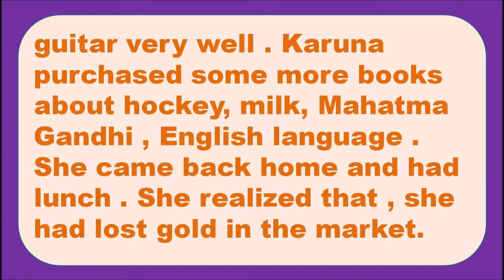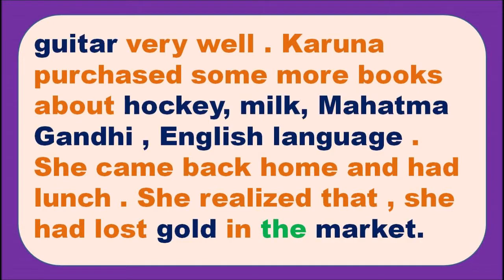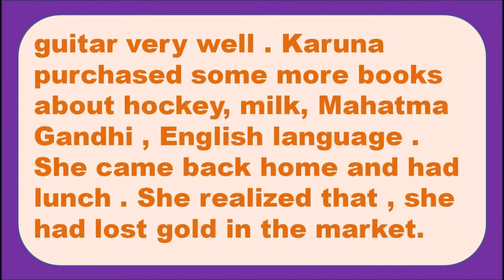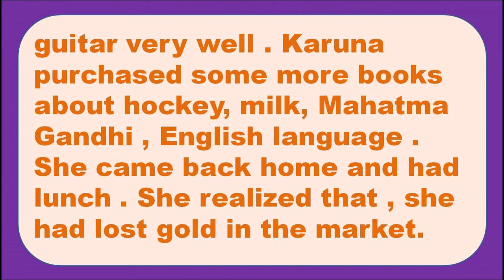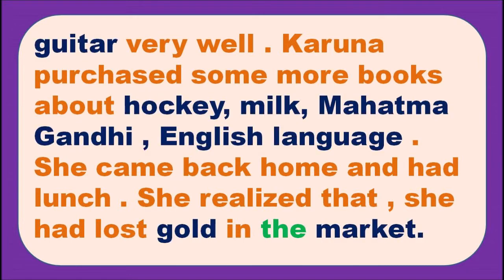Hockey, milk, Mahatma Gandhi, English language — with these words we should not use any article. Hockey is the name of a sport; with names of sports and games we don't use articles. Milk is used in a general sense, so no article. Mahatma Gandhi is a proper noun. With names of languages we don't use any articles. Gold is a material noun, so no article. 'The market' — it is the already-known market.